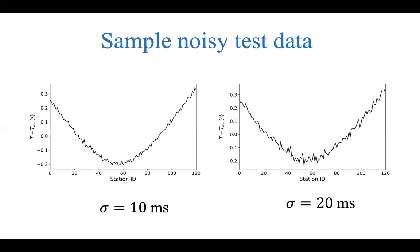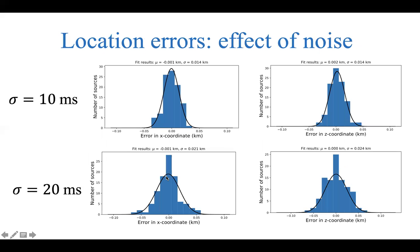We consider two noise cases. In the first case, we apply Gaussian noise with a standard deviation of 10 milliseconds to the travel times. The histograms show errors for the x and z coordinates that are centered around zero mean in both cases, with a standard deviation of 14 meters. The maximum errors observed are about 40 meters for both x and z coordinates.